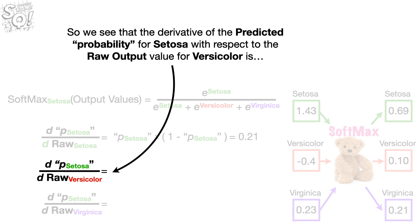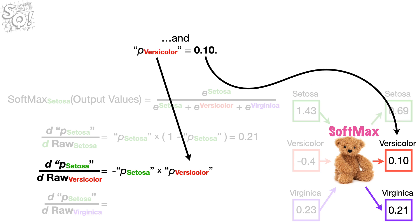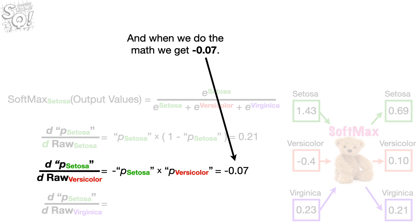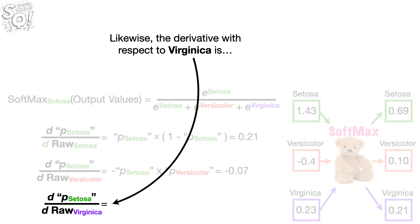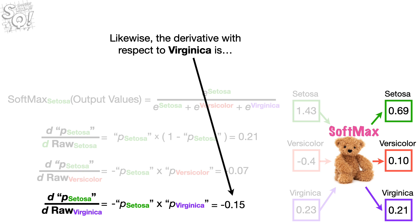So we see that the derivative of the predicted probability for Setosa with respect to the raw output value for Versicolor is the negative predicted probability for Setosa times the predicted probability for Versicolor, where the predicted probability for Setosa equals 0.69 and the predicted probability for Versicolor equals 0.1 — giving us negative 0.07. Likewise, the derivative with respect to Virginica is the negative predicted probability for Setosa times the predicted probability for Virginica, giving us negative 0.15.